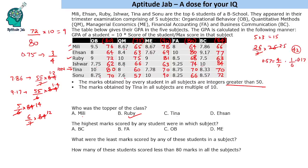The highest marks scored by any student in any subject is 90, scored in ME. The least marks scored by any student in any subject is 57. For the question of how many students scored less than 80 in all subjects: Milli qualifies; Ihsan scored exactly 80 in one subject so is not counted (strictly less than 80); Ruby scored 81 so is excluded; Ishwar, Tina, and Sonu also don't qualify. Only one student scored less than 80 in all subjects.